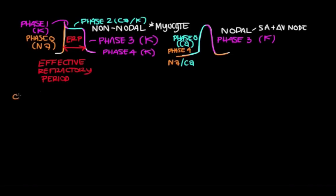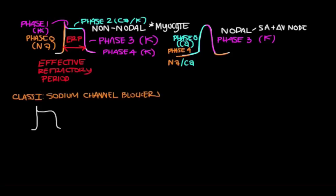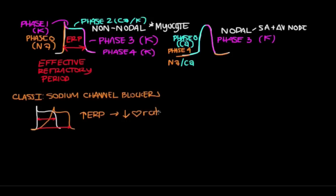There are four different types of antiarrhythmics, starting with class 1 — sodium channel blockers. In the non-nodal action potential, sodium channels are really important for phase 0. If you block sodium channels, it takes longer to get through phase 0, which extends the effective refractory period. And like we said, when you extend the ERP, you have a longer time between depolarizations, meaning longer time between heartbeats, meaning you're slowing down the heart rate. That's why sodium channel blockers are great for treating supraventricular tachycardias, or SVTs.